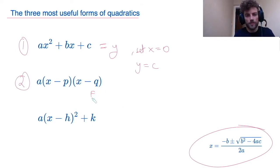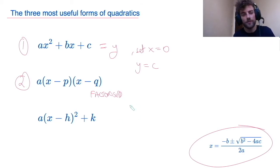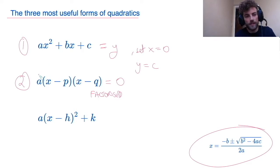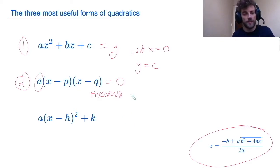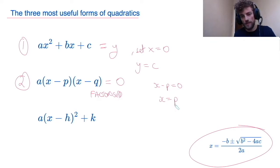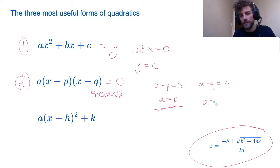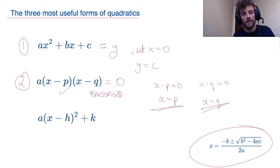Form number 2, I like to call the factorized form, and it is very useful for finding the roots even quicker. If this equals 0, I can quickly conclude that there is a product of three numbers: a, x minus p, and x minus q. If a product of three numbers equals 0, one of those numbers must be 0. So either x minus p equals 0, giving x equals p — one root — or x minus q equals 0, giving x equals q. So having the quadratic equation in this form is very useful because I can quickly read off my roots, p and q.